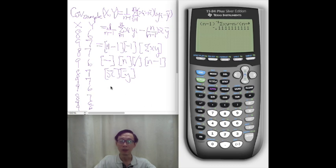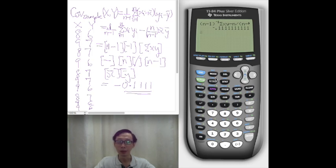And the calculator says the sample covariance of x and y is negative 0.1111. So we can get it pretty easily.